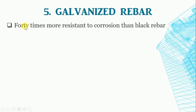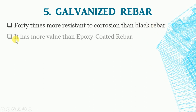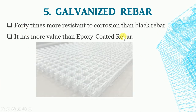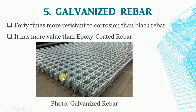Galvanized Rebar: Galvanized rebar is 40 times more resistant to corrosion than black rebar. It is also more difficult to damage the coating of galvanized rebar, and in that respect it has more value than epoxy coated rebar. However, it is about 40% more expensive than epoxy coated rebar.